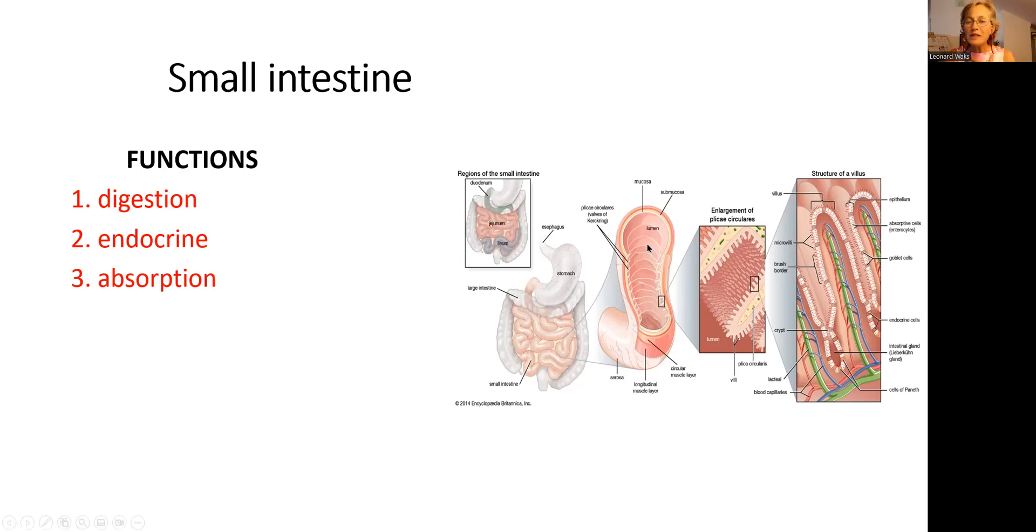Those creases and villi drastically increase the surface of small intestine. Small intestine is about six, seven, eight meters long. But because of those creeps and villi, the surface becomes enormous. So you can assume that the digestion power, endocrine power, and absorption is huge.